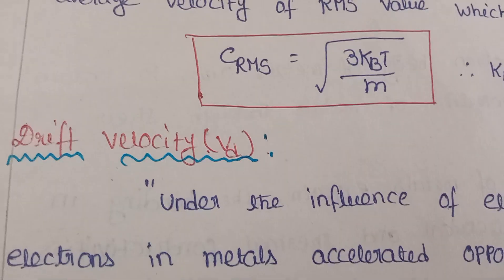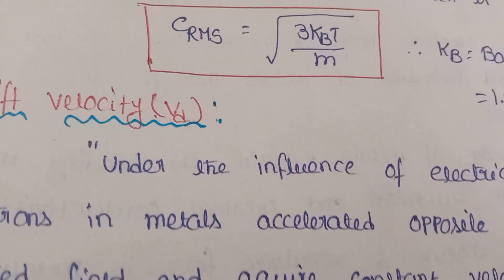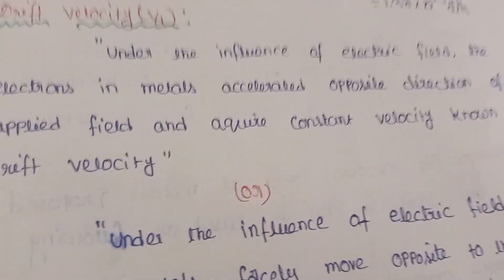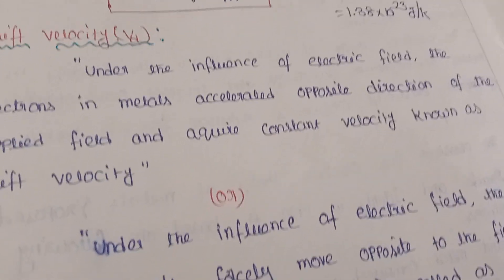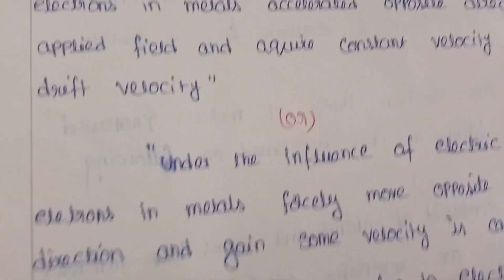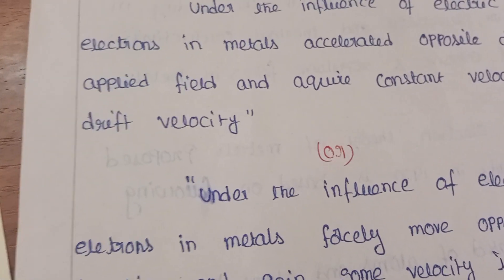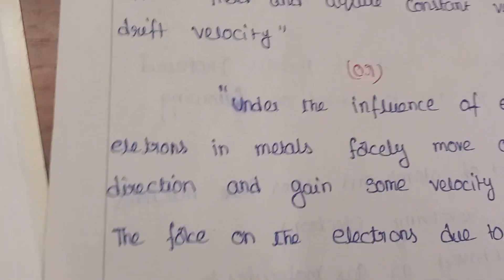Our aim is to determine the electrical conductivity using classical free electron theory. Under the influence of the electric field, the electrons in a metal accelerate in the opposite direction of the applied electric field and acquire a constant velocity. This velocity is known as drift velocity.